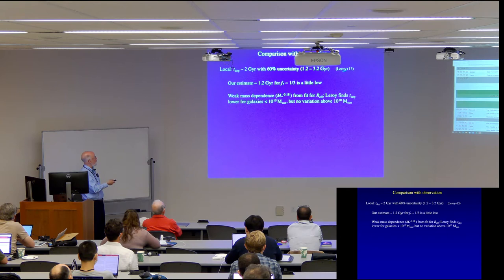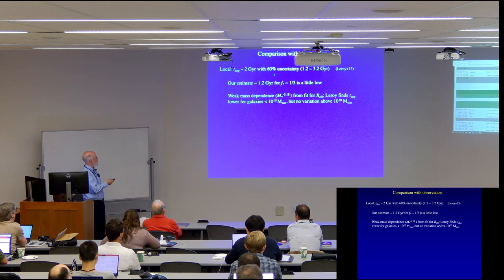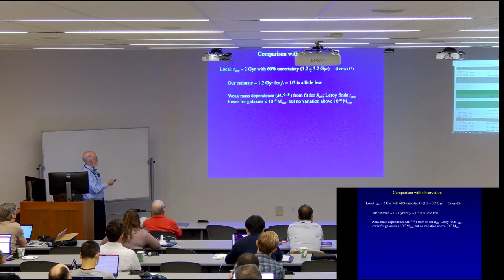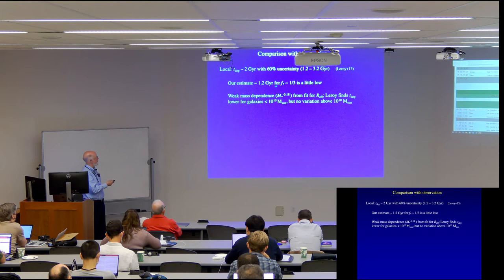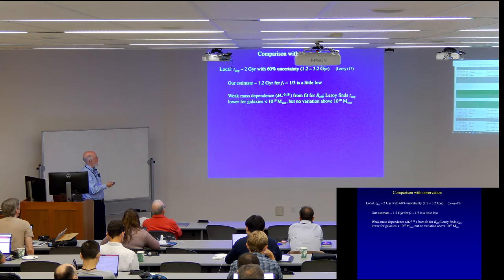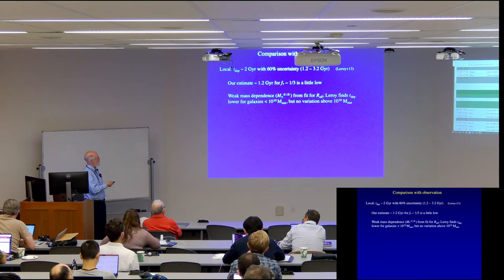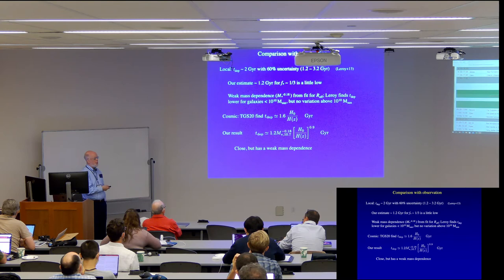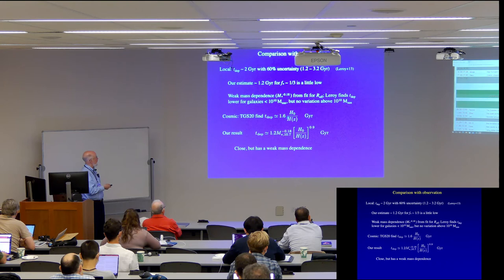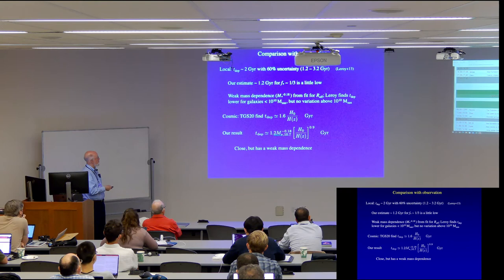So our estimate with this is sort of at the low end of that. It's a little low, but it's really, at least in the ballpark. And we had a weak mass dependence from the, for the effective radius. Now Leroy finds that the depletion time is actually a little bit lower for the low mass galaxies, whereas we would have predicted the opposite. So that's, this mass dependence is not in agreement with observation. So then I can go ahead and compare with the results of Linda et al. And so they found a 1.6 giga years and went over the Hubble constant here. And here's our result to compare with.